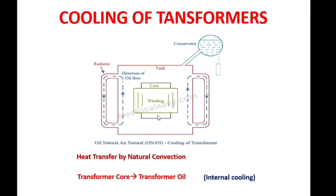Observe this two-dimensional sketch of the electrical transformer. Transformer cooling consists of internal cooling and external cooling. In internal cooling, during operation of the electrical transformer, heat is generated at the transformer core. The transformer function is to increase or decrease alternating current voltage. The generated heat is transferred to the surrounding transformer oil due to the temperature difference between the transformer core and windings and the transformer oil. Heat is dissipated from the transformer core to the transformer oil — this is about internal cooling, where heat is transferred by means of natural convection.